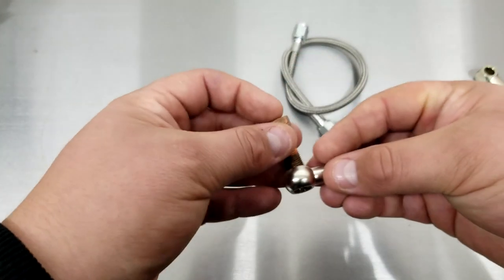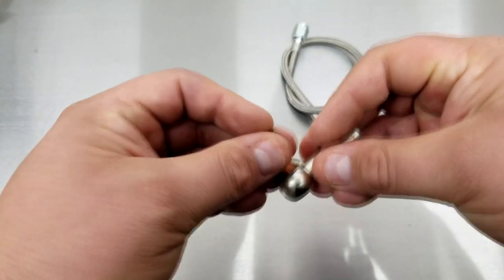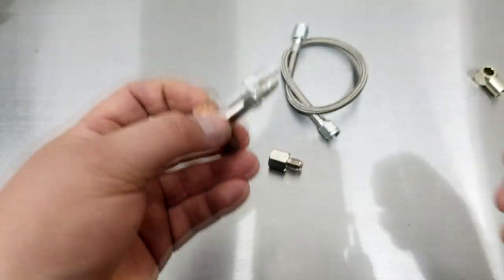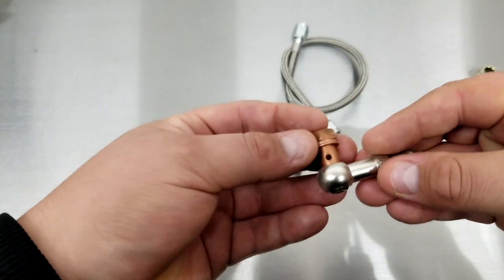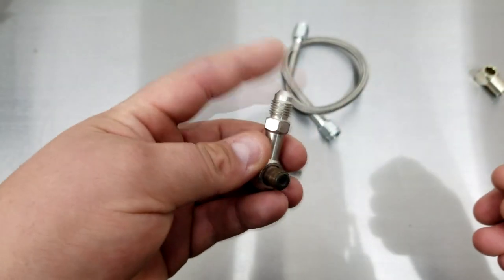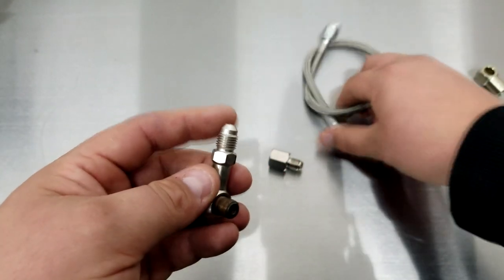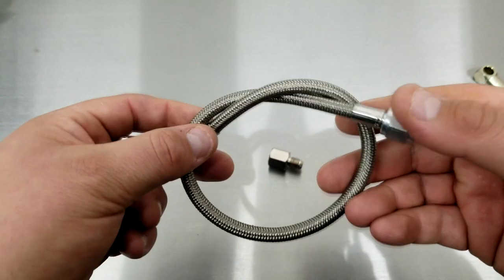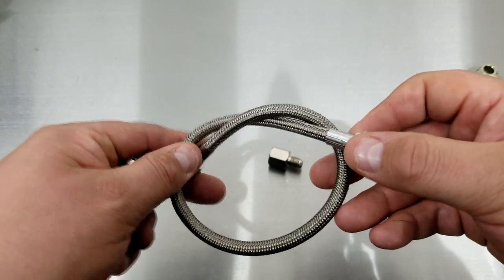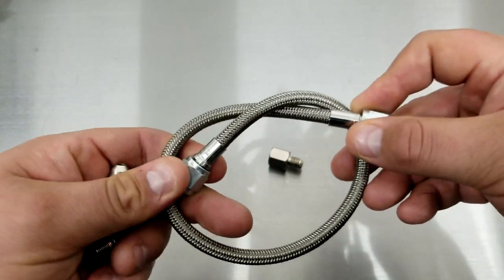So this banjo fitting fits—well actually, you know what, this isn't made for it, but still it'll work. Of course, don't forget your crush washers. So this is a 4AN fitting and this is a 4AN line. I only went with a 16-inch line because it doesn't need to reach that far.